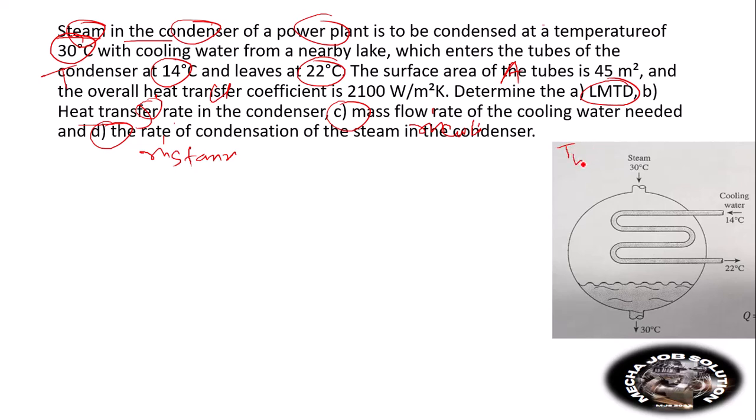First, we need to clarify the temperatures. T steam in equals T steam out equals 30°C, T cooling in equals 14°C, and T cooling out equals 22°C. ΔT₁ equals T steam in minus T cooling out, which is 30 minus 22, giving us 8°C.